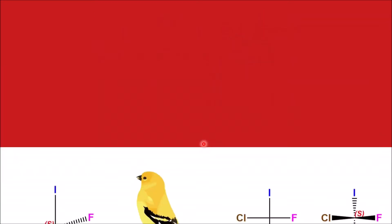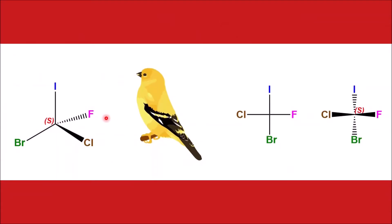Let us first try to understand how to do this conversion in a molecule having one chiral center. This is the wedge-dash formula. If you look at this wedge-dash formula from a bird's perspective, you would find that the iodine atom would be on the top and the bromine atom, which is in the plane of the paper, would be at the bottom. The chlorine atom, which is coming out of the plane of the paper, will be on its left hand, and fluorine, which is going away from us into the plane of the paper, will be coming at the right. So this is the Fischer projection formula for this same wedge-dash structure.